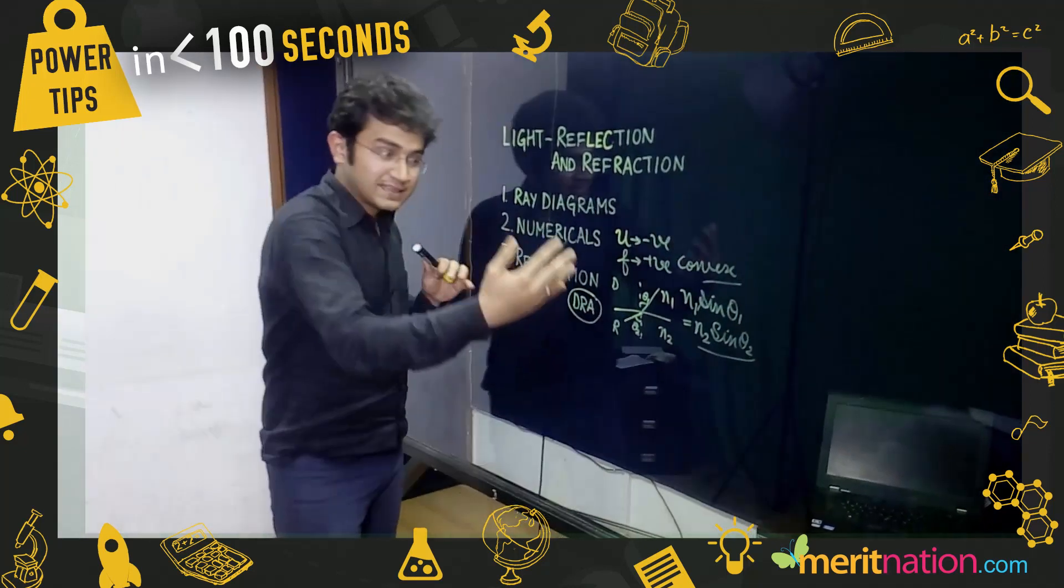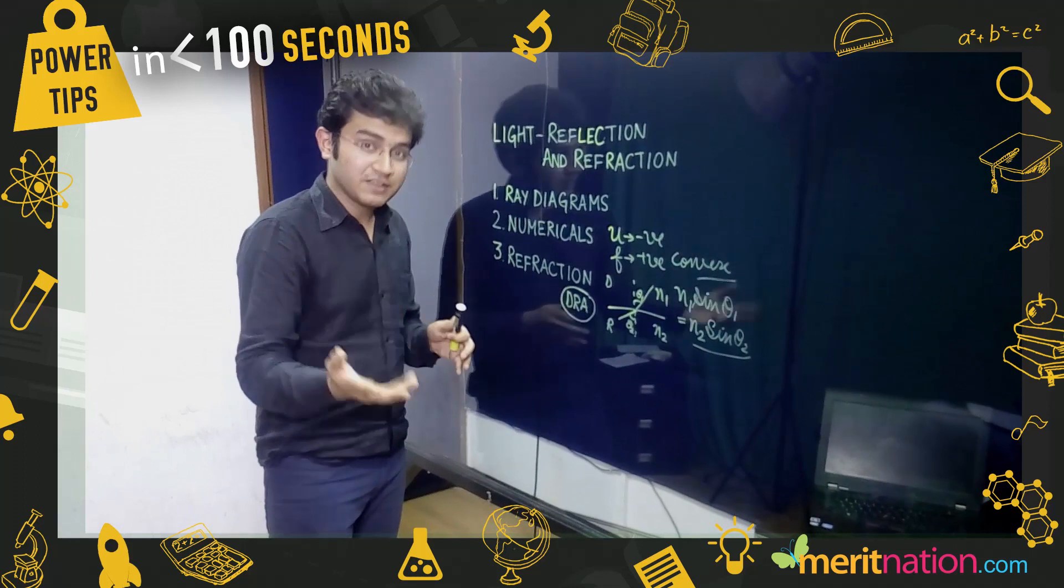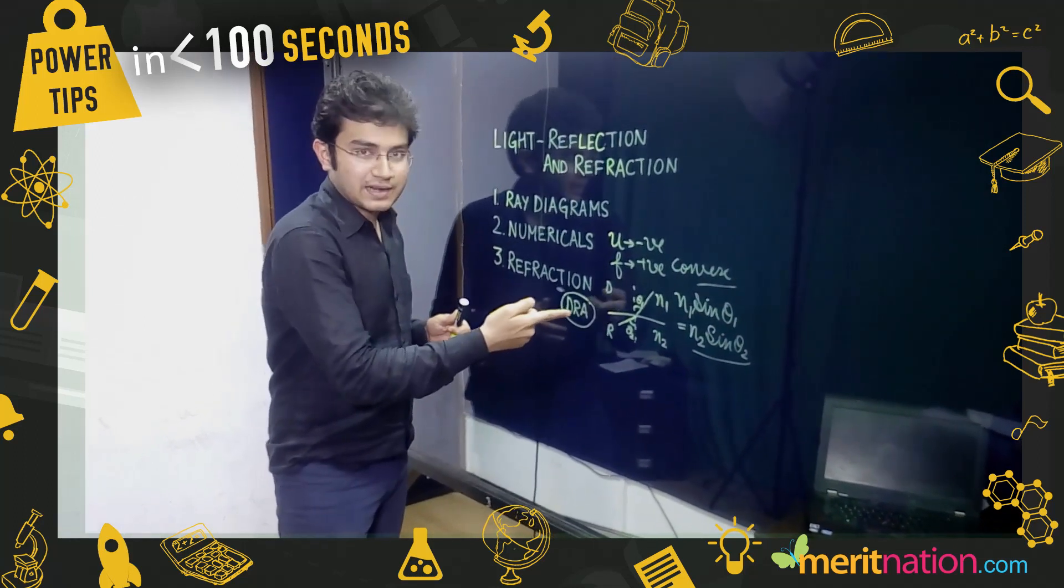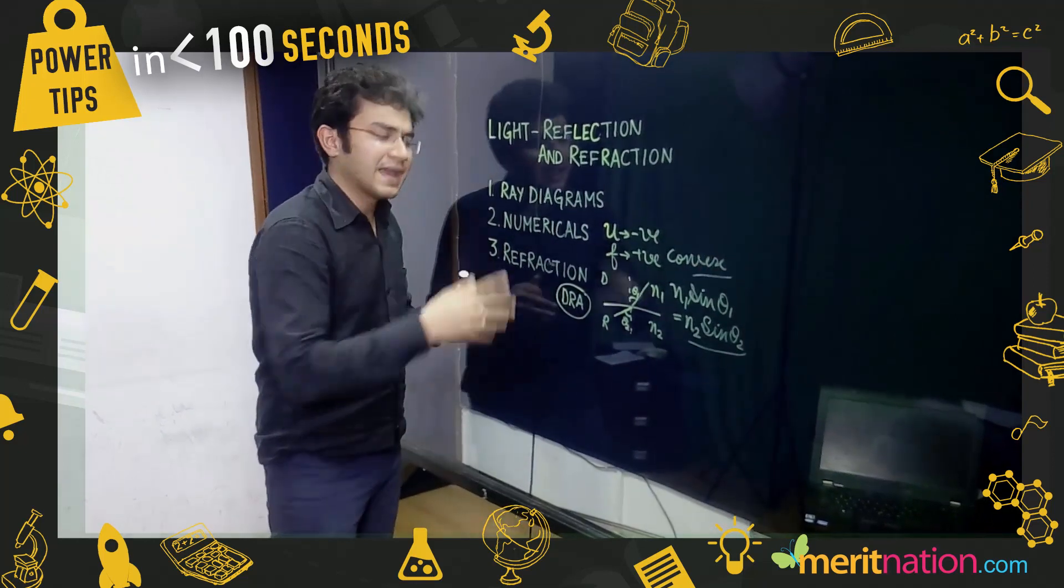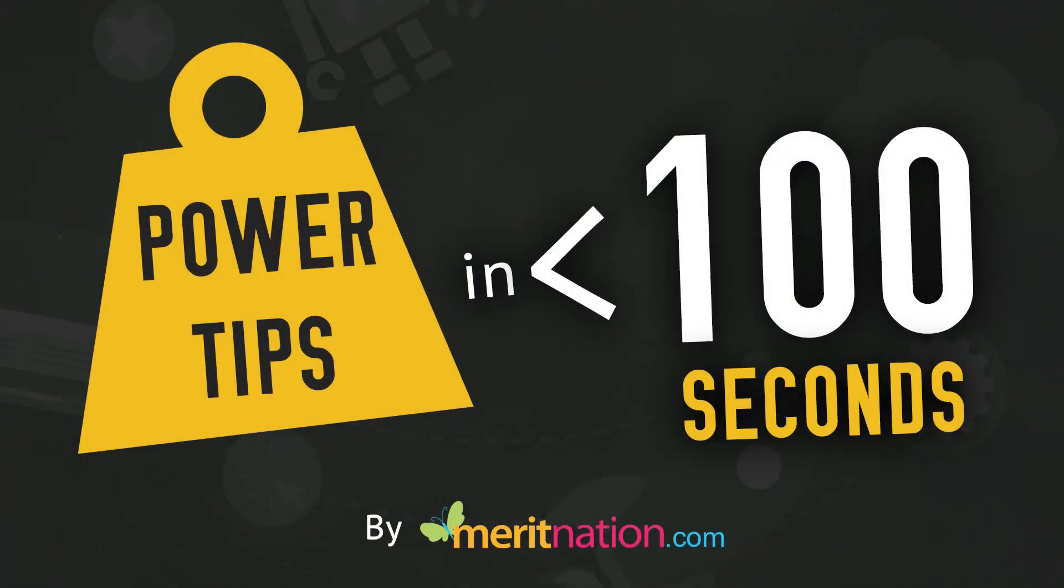When you need to know whether the light ray will bend towards or away from the normal, remember DRA: going from denser to rarer, the ray bends away from the normal, and vice versa.